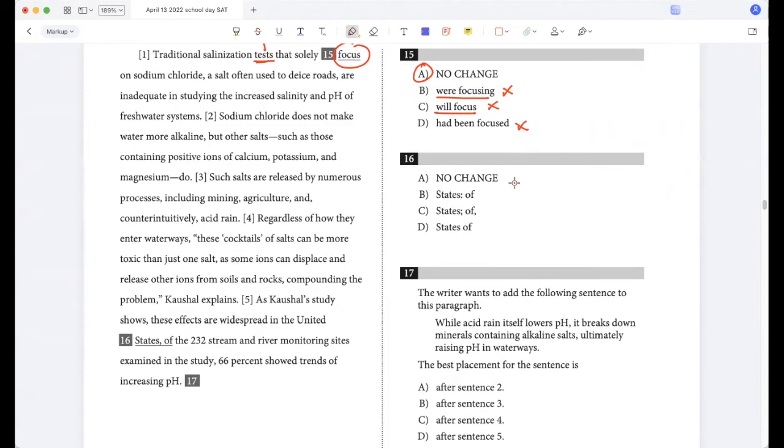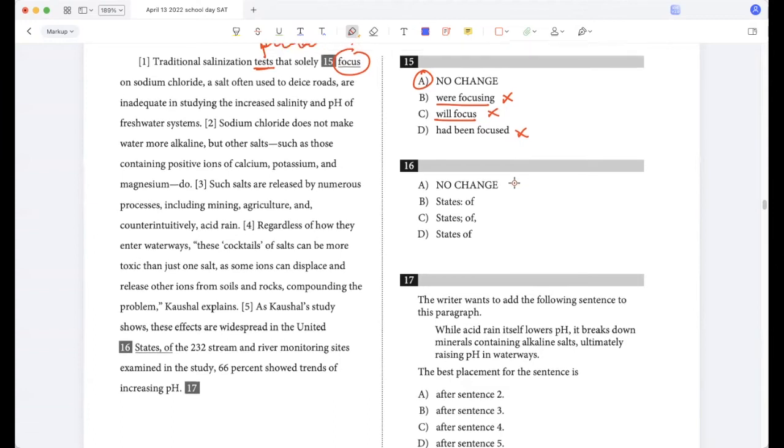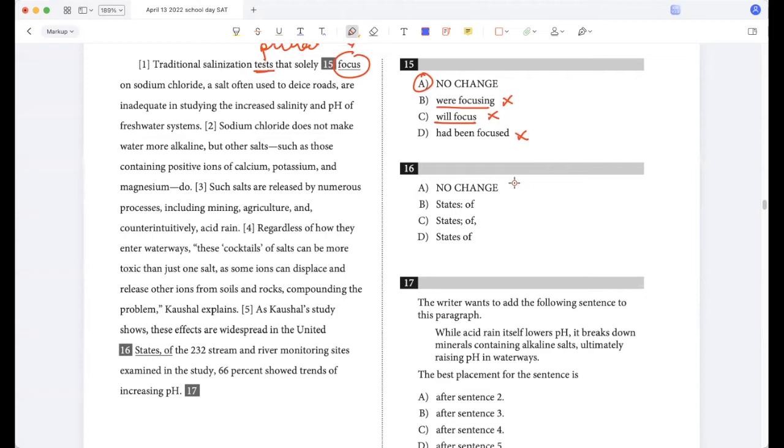As Kaushal's study shows, these effects are widespread in the U.S. Of the 232 stream and river monitoring sites examined in the study, 66% showed trends of increasing pH. So here this comma is incorrect because I have an independent sentence here and another independent sentence here, so a comma can't go between them. A colon makes sense because I'm putting a colon at the end of the complete sentence, and then that colon will help me understand how these effects are widespread. So B is good. A semicolon is fine, but the comma after 'of' is wrong.